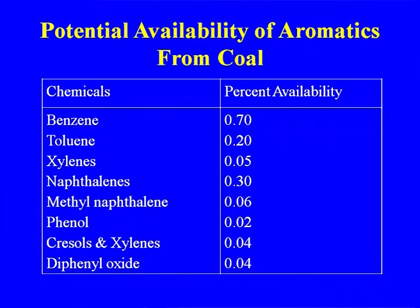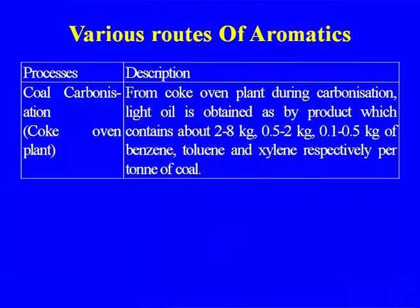One way to obtain aromatics was from coal — from the coal carbonization unit. The yield of benzene, toluene, and xylene from coal is much less than what you get from petrochemicals. The figures are around 2 to 8 kg benzene, 0.5 to 2 kg toluene, and 0.15 to 0.5 kg xylene per ton of coal.